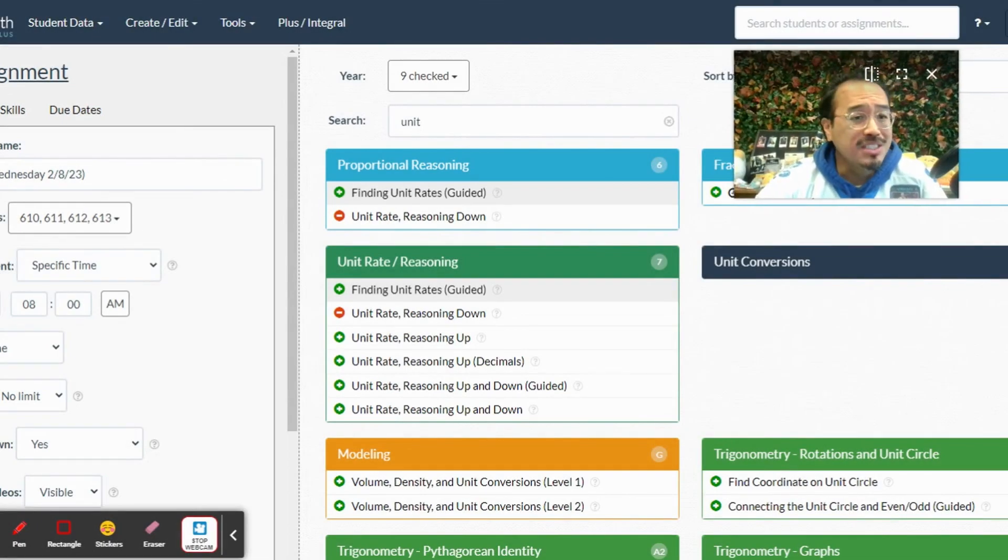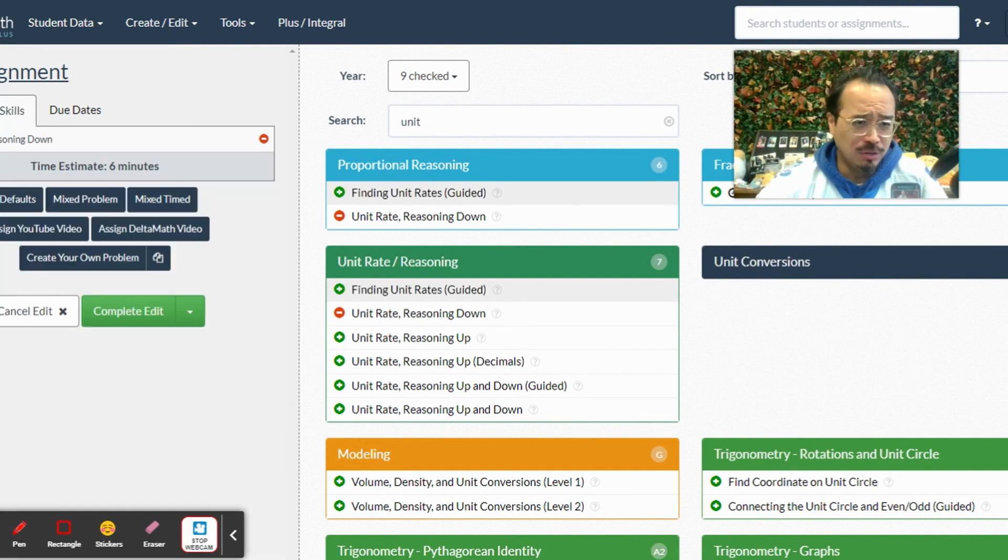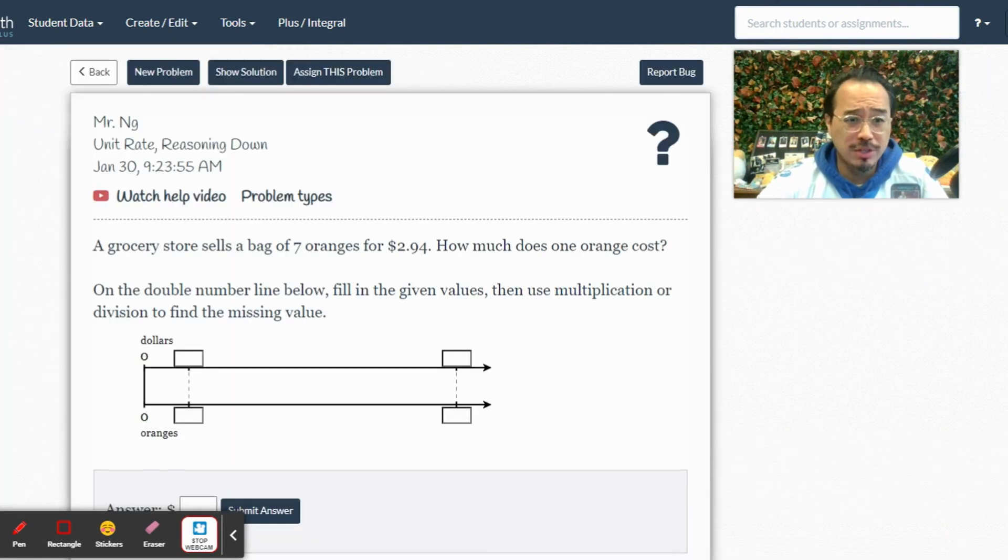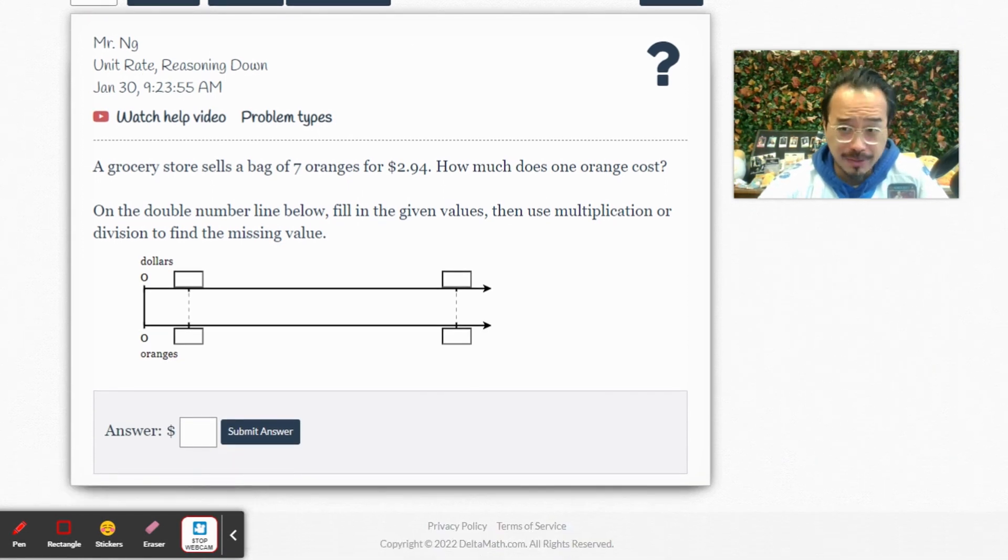Okay, all right, so homework number 67 for Wednesday, February 8th. We're still doing unit rate. The questions look a little different again. You guys know how to calculate unit rate, but you need to practice. What's more important is that for these questions, I want you to know how to use Delta Math so that you don't get stuck spending 15 minutes trying to figure out how to put the answers in.